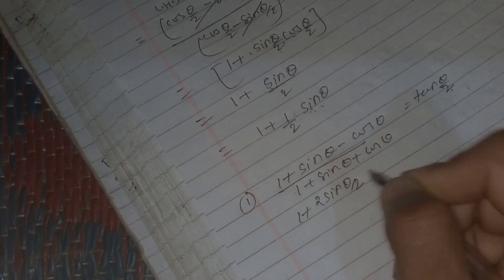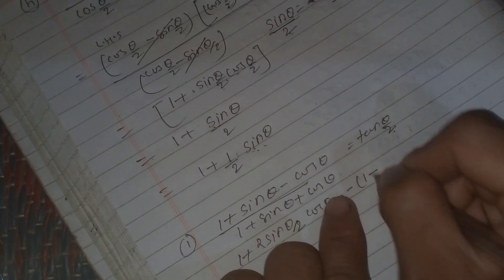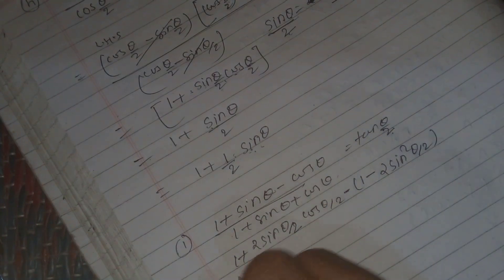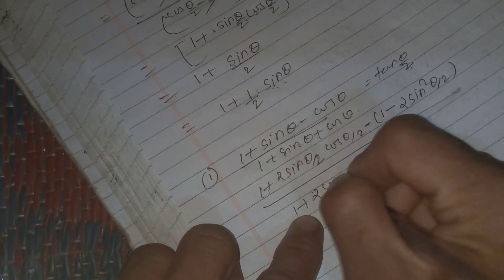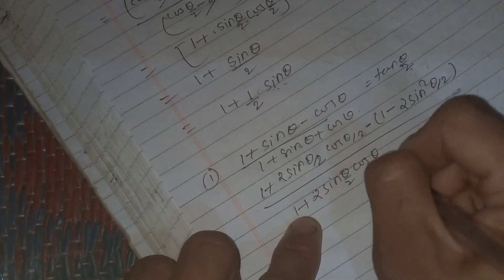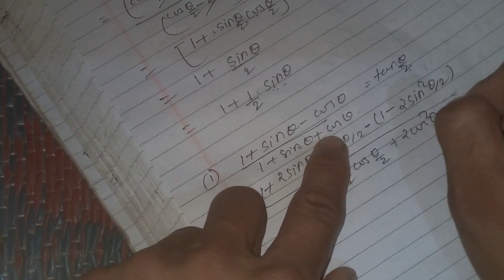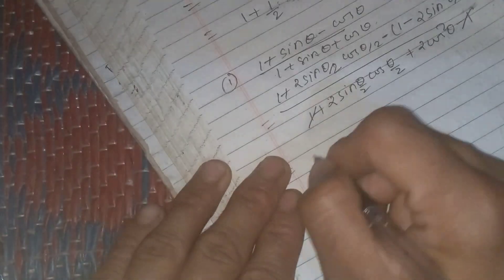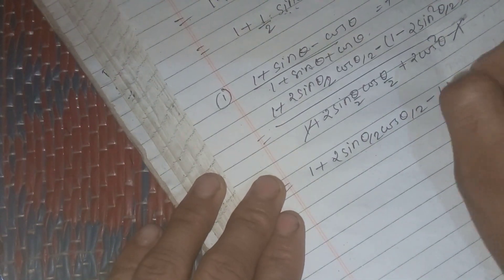Theta by 2: 1 plus sin theta, sin theta, sin theta, cos theta by 2 minus cos theta sin theta. Sin theta minus sin squared theta by 2, sin 3 cos 1 3. So 2 sin theta by 2 cos theta by 2, and plus cos theta formula cos theta by 2. Cos squared theta minus 1, plus 1 minus 1 cancel out. This is 1 plus 2 sin theta by 2 cos theta by 2 minus 1 plus 2.